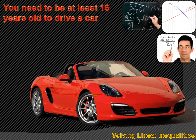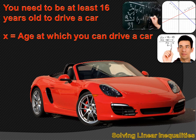For instance, you need to be at least 16 years old to drive a car. That's not an equation — it doesn't say you have to be exactly 16 years old. It says you need to be at least 16 years old. We could write that mathematically: if we let X equal the age at which you can drive a car, then we could say X has to be greater than or equal to 16.